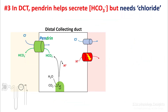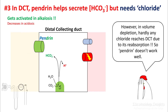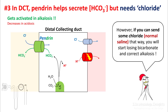In the DCT, there is a molecule called Pendrin that helps secrete bicarbonate, but it needs chloride for its action. However, in volume depletion, hardly any chloride reaches the DCT due to its reabsorption in the proximal tubules, so Pendrin doesn't work well. If you give these patients normal saline, you can deliver chloride to the DCT, which will help excretion of bicarbonate and therefore help correct alkalosis.